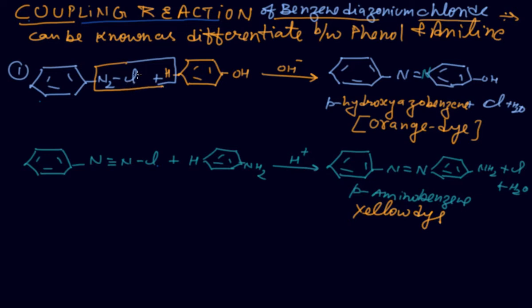HCl will come out, N double bond N forms, and we get para-hydroxyazobenzene from this coupling reaction, which gives an orange dye. You must remember: phenol - in phenol, that stands for O.